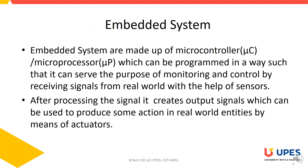Embedded systems are made of microprocessors as well as microcontrollers — both are processing units. A microcontroller is a more compact chip compared to a microprocessor, and both are programmable. They can serve the purpose of monitoring and control by receiving signals from the real world with the help of sensors, and after processing these signals they create output signals.